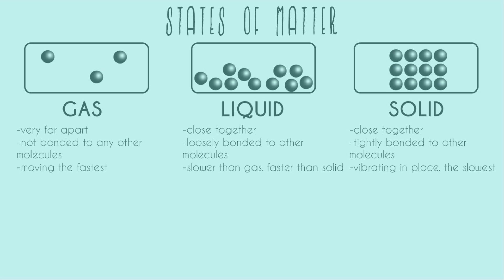Talking about movement: gas molecules and atoms are moving the fastest. Liquids are in the middle — slower than gas but faster than solid. Solids are moving the slowest, vibrating in place. Nothing on earth is ever completely still; even at very cold temperatures atoms and molecules are still vibrating, because they all have energy and some of that energy gets turned into movement.